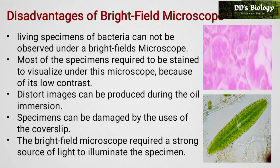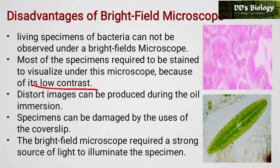Disadvantages: living specimens of bacteria cannot be observed under the bright field microscope. When staining an organism, the organism must be killed, so live bacteria with flagella movement cannot be seen. Most specimens require staining to be visualized due to low contrast.